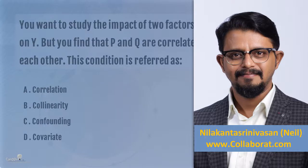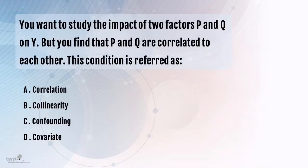Let's take this question. You want to study the impact of two factors P and Q on Y, but you find that P and Q are correlated to each other. This condition is referred to as: correlation, collinearity, confounding, or covariate. What is the correct answer?